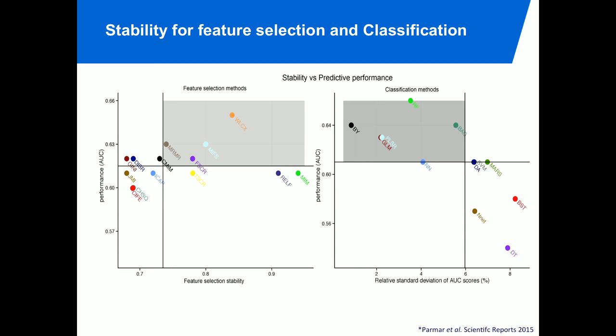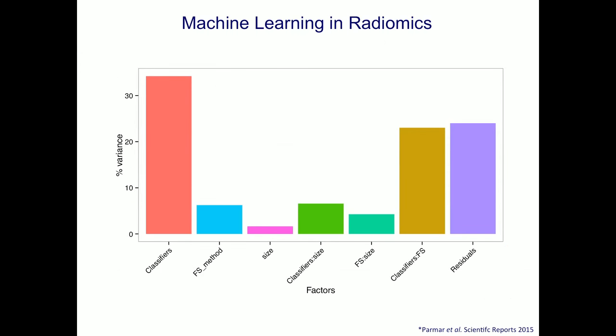Using an ANOVA, we can see what factors really matter. The classifier method chosen is crucial for subsequent results, the feature selection method matters less, and the number of features does not matter that much — whether you take 10 or 20 features, you get more or less the same results. Using these statistical methods, we really have to drill down to the best features and the best methods.